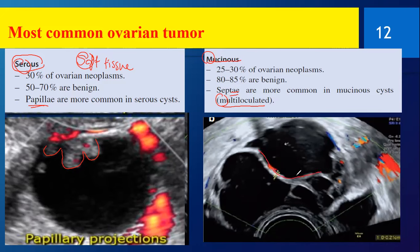Looking at the image, you can see the septa giving a multiloculated appearance. Of course, there will be vascular flow inside to confirm this is a tumor in the first place. The serous cystadenoma would have a soft tissue component — again with a vascular component.